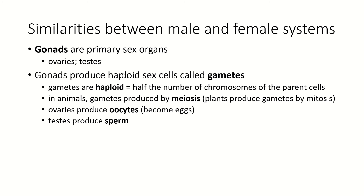Plants produce their gametes by mitosis. The ovaries produce what we call oocytes, which when fully mature become eggs. The testes produce sperm. The gonads also produce hormones, which are important in development and in the maintenance of what we call secondary sexual characteristics — body hair and muscles in men (men do tend to have more muscles), and breasts, wider hips, and more body fat in females.